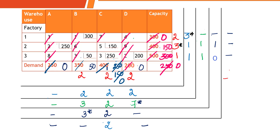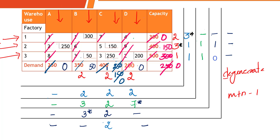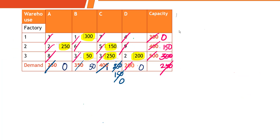Now check whether this is a degenerate problem using the rule m + n - 1. We have m = 3 rows and n = 4 columns, so 3 + 4 - 1 = 6. Count the allocated cells: 1st, 2nd, 3rd, 4th, 5th, 6th — exactly 6 cells. This is a non-degenerate problem, so the solution is valid.